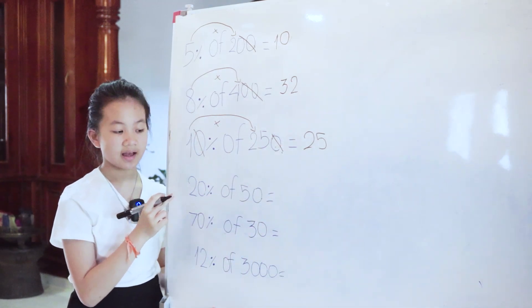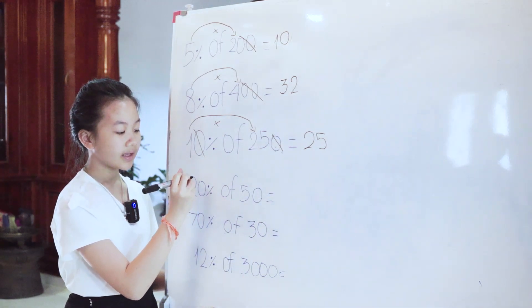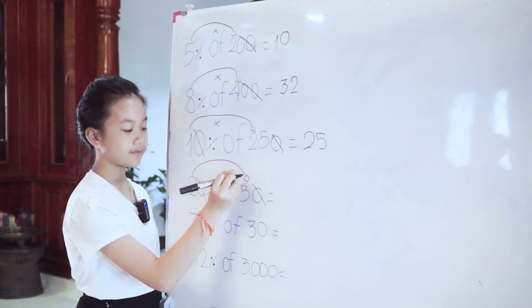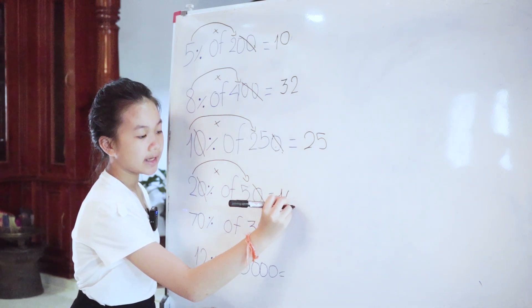20% of 50, cut zero here, cut zero here. Then 2 x 5 equals 10.